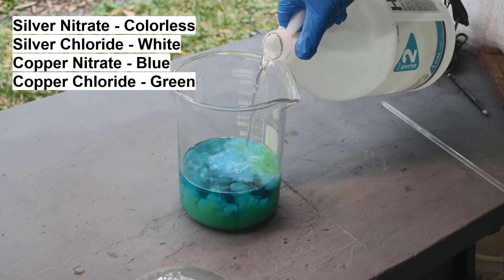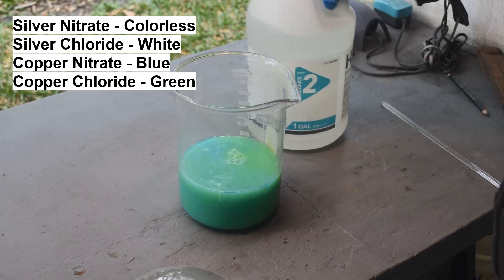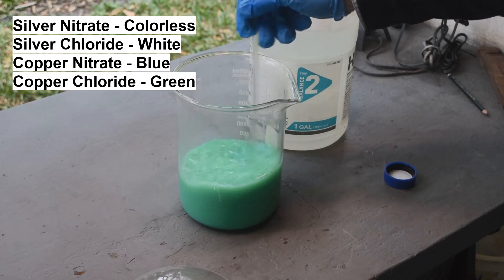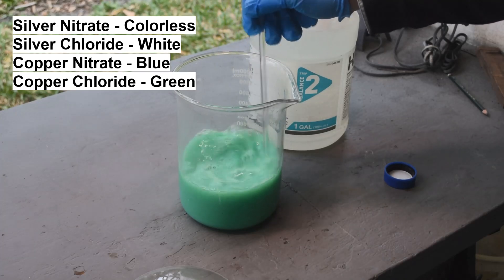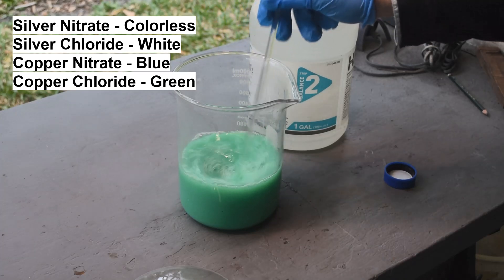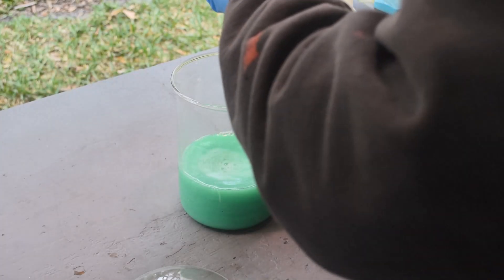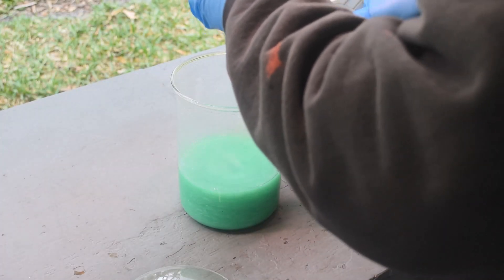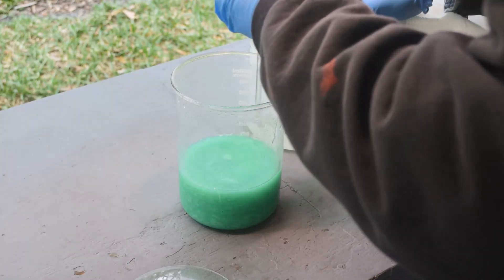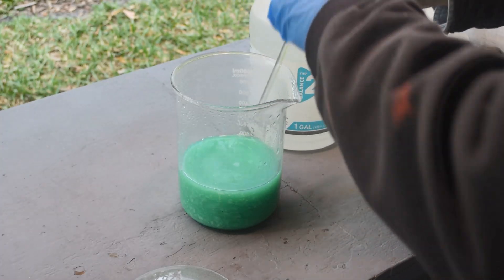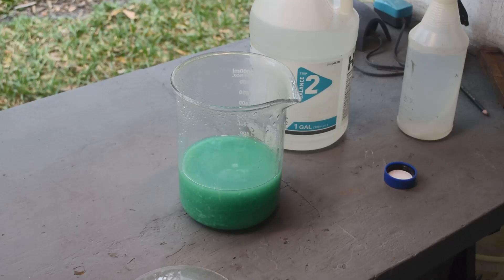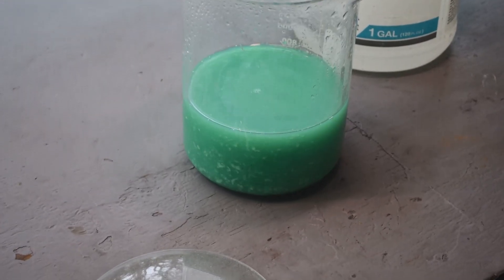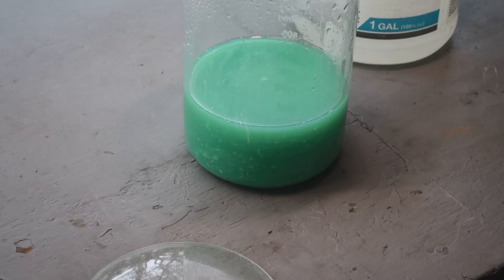Yeah, there we go. All right, so we'll let this settle out and we'll get a nice layer of silver chloride down on the bottom. Yeah, see that cottage cheesy silver chloride starting to accumulate down there.